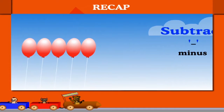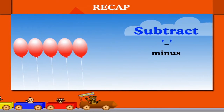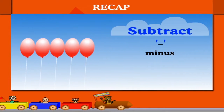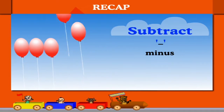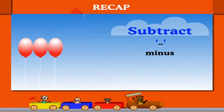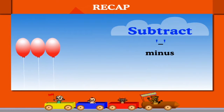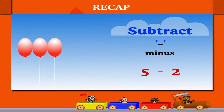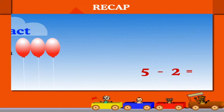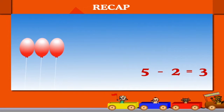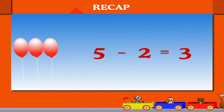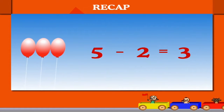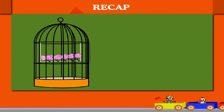Here are 5 balloons. Let's learn to subtract with the minus sign. If 2 balloons flew away, how many left? It is 5 minus 2 equal to 3. That was easy.